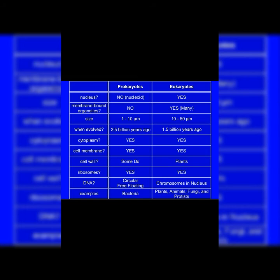So prokaryotes are the older cells. Cytoplasm is present in both prokaryotes and eukaryotes, and the cell membrane is also present in both. Cell wall is present especially in plant cells among eukaryotes, but in prokaryotes some have a cell wall and some do not. Ribosomes are present in both types of cells. DNA is present in both, but in prokaryotes, circular free-floating DNA is present.